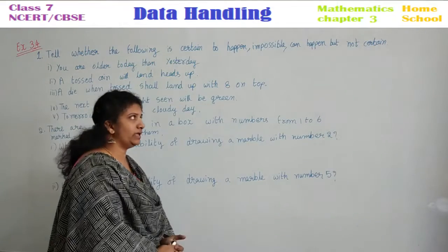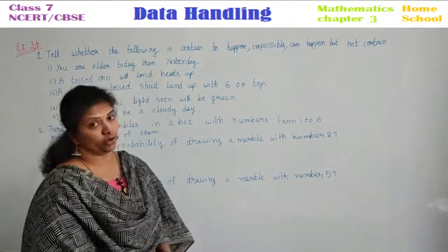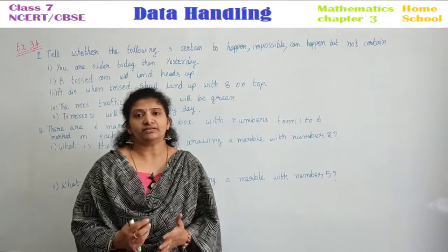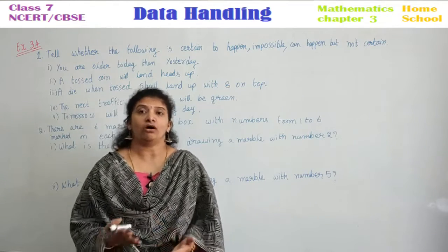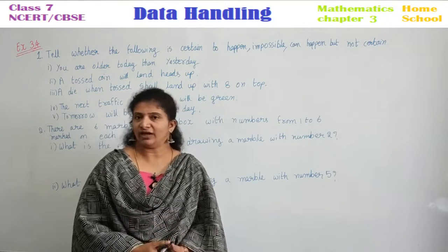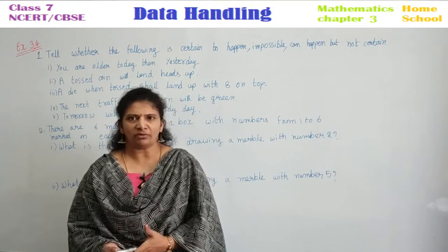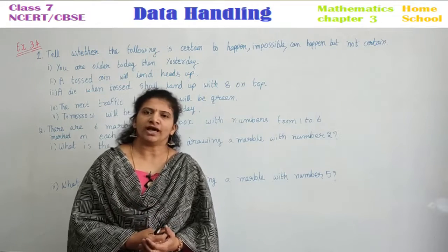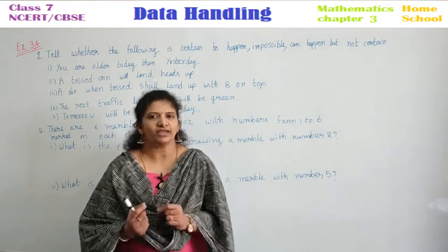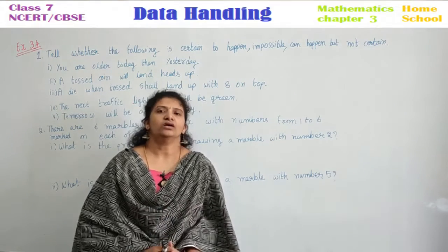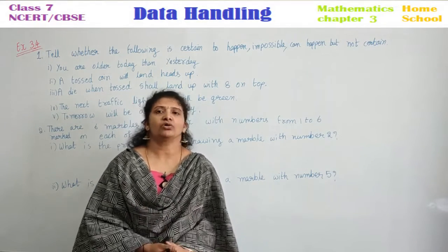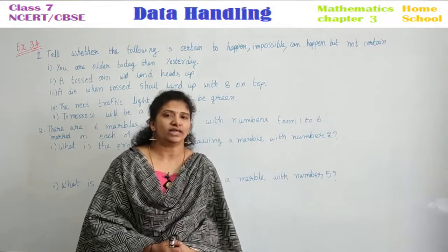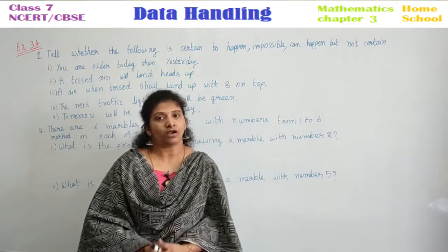What is this? This is probability. Probability is the chance of happening or not happening of an event. We have discussed what probability is, what an event is, and what an outcome is — we already covered this in the introductory part of this chapter. You are going to study this more deeply in your future classes. Here we have only chance of happening or not happening.